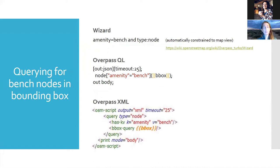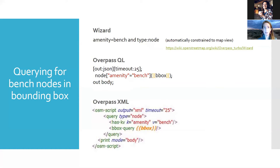So that's the OverpassQL language. I wanted to show quickly what it looks like when you're working with the three different tools I mentioned as you're typing things in. The first one is the wizard in Overpass Turbo. The example I'm looking for is back to our benches — nodes that have marked a bench. If I'm in the wizard in Overpass Turbo, all I have to type is 'amenity,' which is the key, equals 'bench,' and type 'node,' and then this gets automatically constrained to the map view.